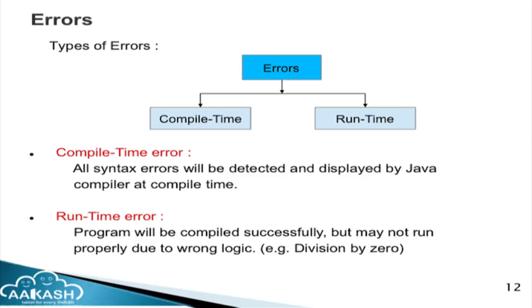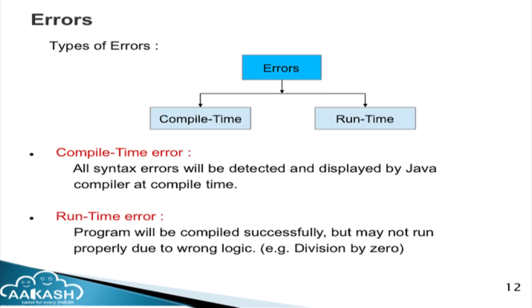Whenever we write code, sometimes we forget to put a semicolon or make errors. There are two types of errors in Java: compile-time error and run-time error. In compile-time error, all syntax errors are detected and displayed by the Java compiler at compile time — for example, forgetting a semicolon. The program will not compile successfully. In run-time error, the program compiles successfully with no syntax errors, but may not run properly due to wrong logic, such as division by zero.